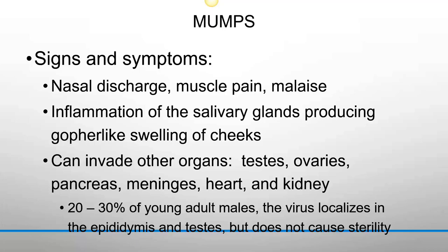The next one is mumps. Mumps is a respiratory-mixed infection with cold-like symptoms, but it specifically infects the salivary glands, which are a major component of your digestive tract. Mumps is caused by the mumps virus and is covered under the MMR vaccine — measles, mumps, and rubella.